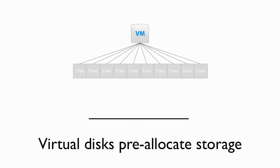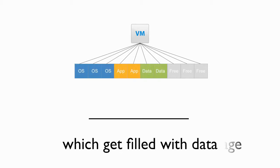Maybe the best way for us to begin is to look at the storage of a virtual machine. This is a blank virtual disk. It's pre-allocated storage that's yet to be written to. However, virtual machines don't run or operate with blank virtual disks. They actually have operating systems, application binaries, application data sets, and then some extra free space or extra capacity for future growth.